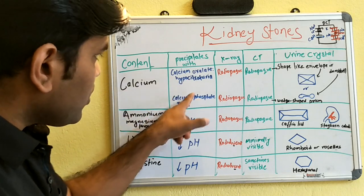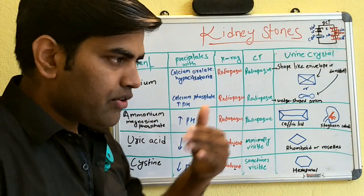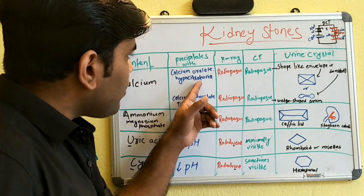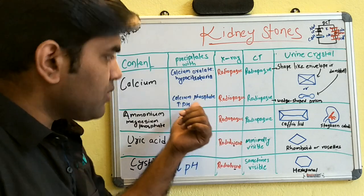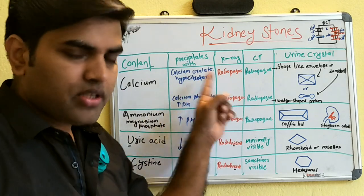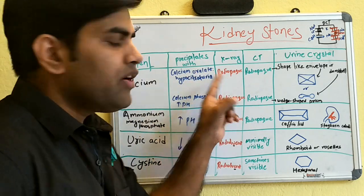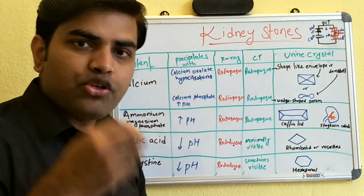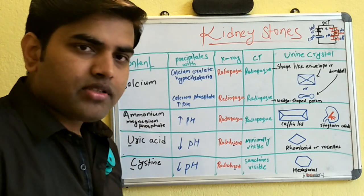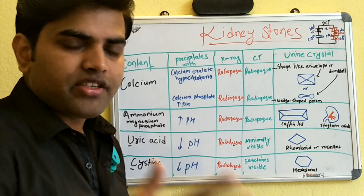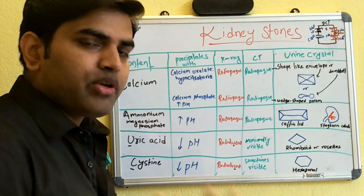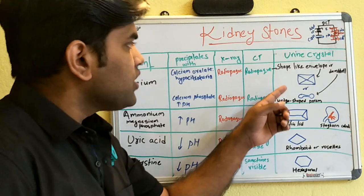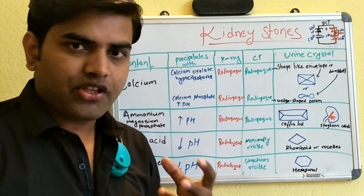On X-ray (KUB — kidney, ureter, bladder), calcium oxalate stones appear radio-opaque due to the presence of calcium. On CT scan, they also appear radio-opaque. When examining the urine of a patient presenting with pain in the right lumbar region radiating to the groin, RBCs (hematuria) will be present, and crystals may also be found in the urine.